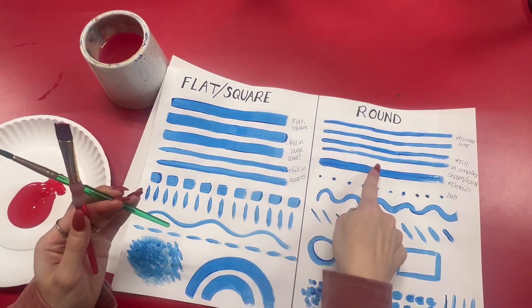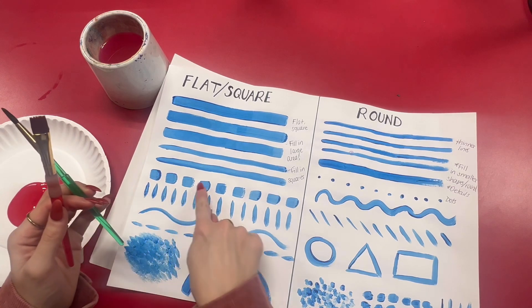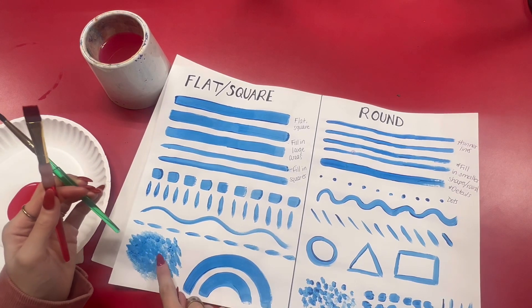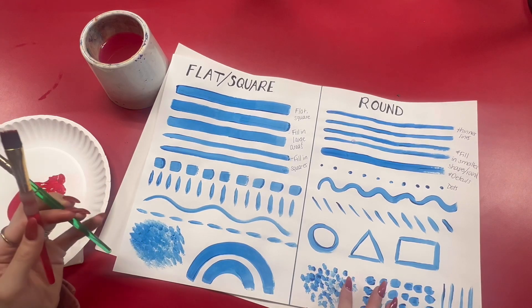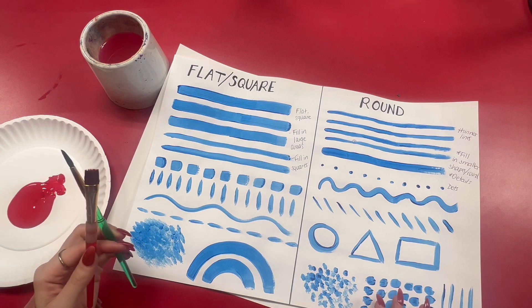You can see the difference here between the two lines that I've made, and I've experimented also by doing shorter strokes with each brush and kind of some dabbing motions to create texture. And you can see I've done a lot of similar things with the two brushes but they turn out differently.